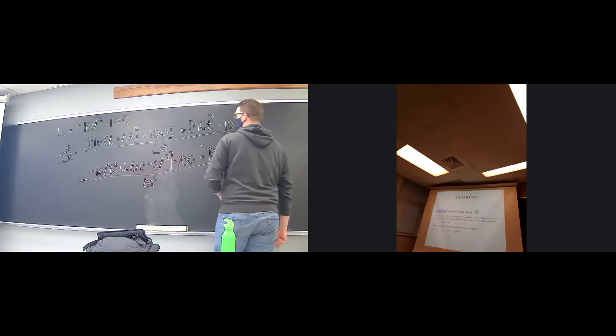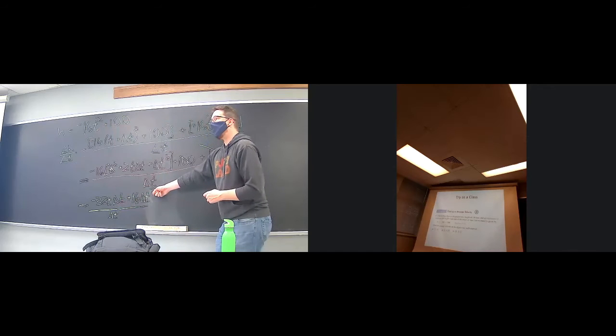When we distribute the 16 through, the 16T squared cancels with the other one, and the hundreds cancel. So we're left with negative 32T delta T plus 16 delta T squared, all divided by delta T. We factor out and cancel delta T to get negative 32T plus 16 delta T.